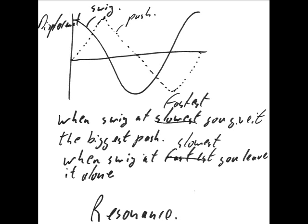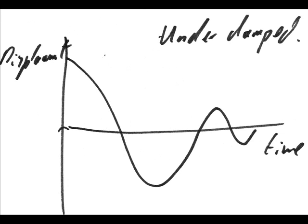An opera singer maintains a note in air that is the same as the natural frequency of a drinking glass. This drinking glass will visibly vibrate as the molecules inside the glass are made to vibrate, and the amplitude of these vibrations increases. If the resonant frequency is maintained long enough, the glass will shatter, having suffered catastrophic structural failure.